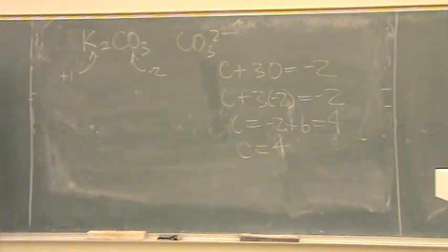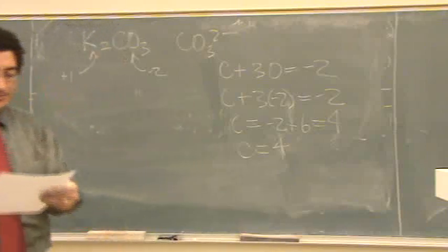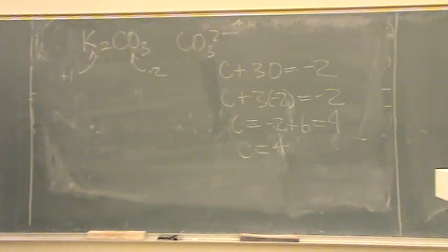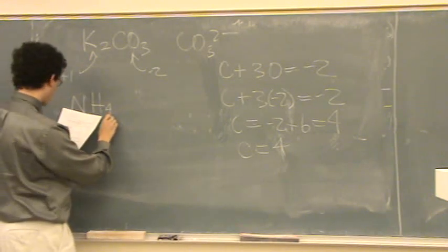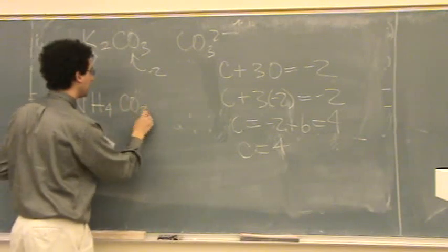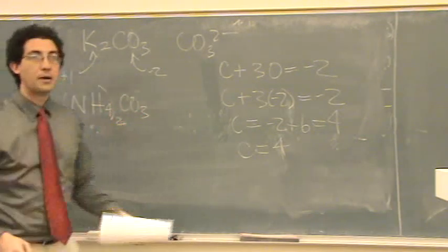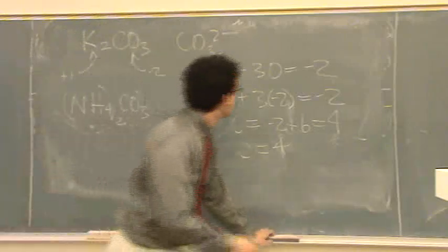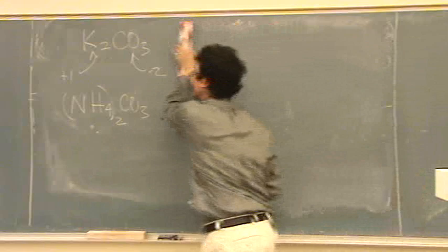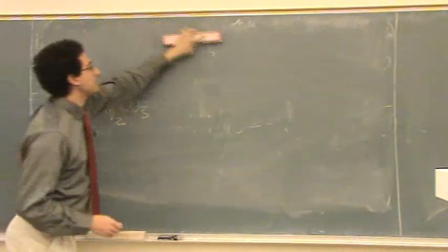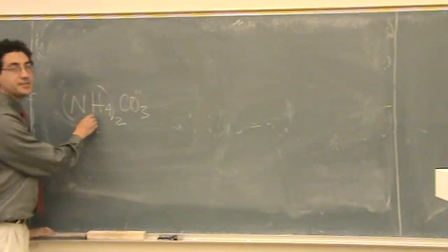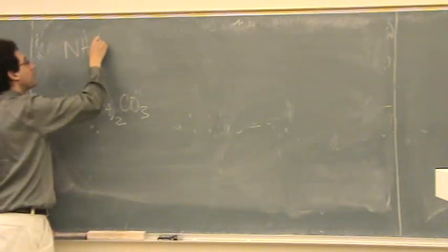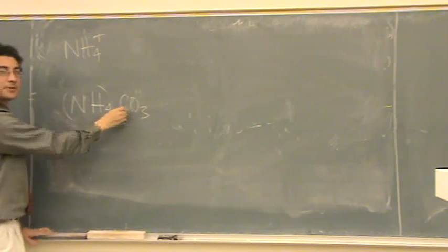Otherwise, you get the idea? You want to try one more from your crazy TA? Yeah. Let's look at one that looks a little more crazy. How about NH four. What's the rest of it? CO3. Ammonium carbonate. Let's erase this. Okay. Well, for this, I guess there's an easy and a hard way to do it. So, I'm going to do it the easy way.